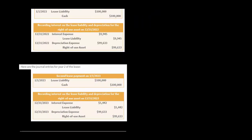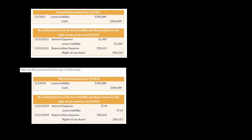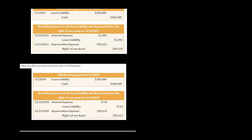Looking at journal entries for year two: when the second lease payment is made, the lease liability goes down by $100,000 and cash goes down by $100,000. Then we recognize interest expense — when you record interest expense the lease liability goes up, but when you make payments the lease liability goes down. Depreciation expense remains the same each period since we're using straight-line. In the final period, the interest expense is $714 because the lease liability is even lower — as the lease liability gets lower and lower, the interest expense accrued each period gets lower and lower as well.